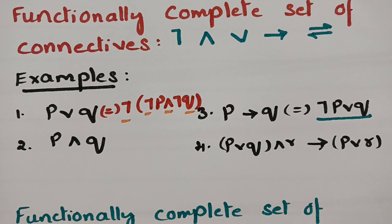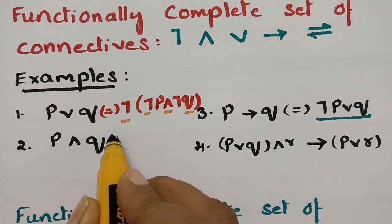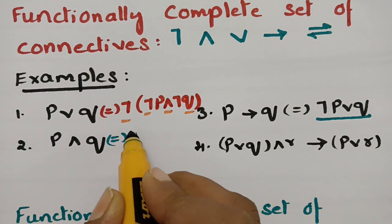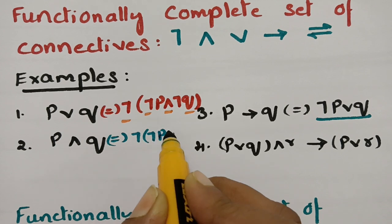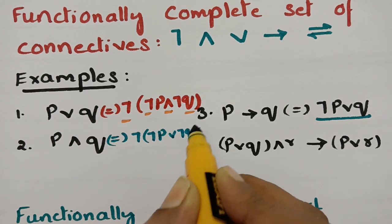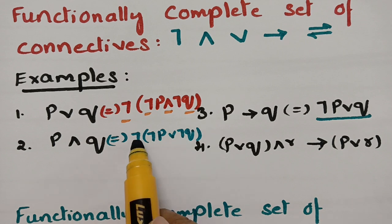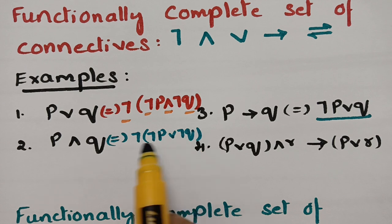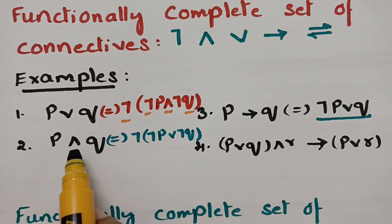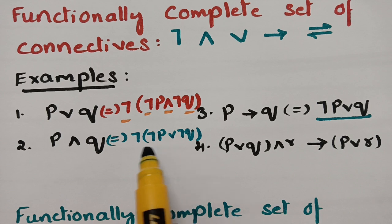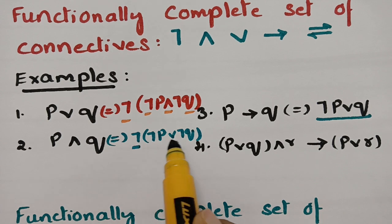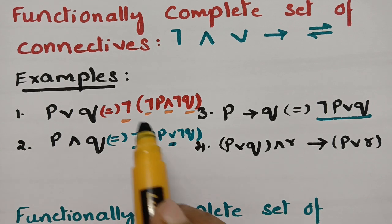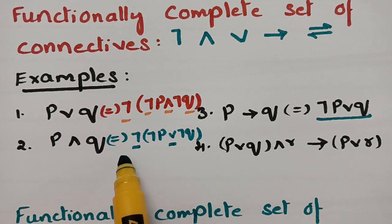Now consider P∧Q. The equivalent statement is negation of (negation P ∨ negation Q), applying De Morgan's law. This gives negation of (negation P) and negation of (negation Q), and by double negation we get P∧Q. If you observe, this equivalent statement contains negation and disjunction. So either negation∧conjunction or negation∨disjunction in the equivalent statement makes it a functionally complete set.